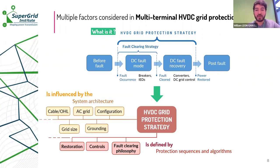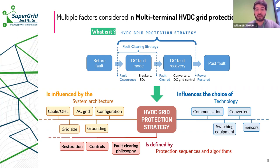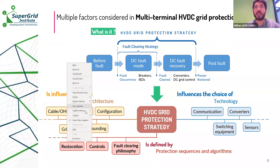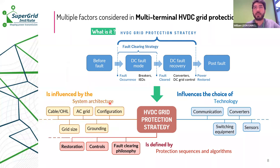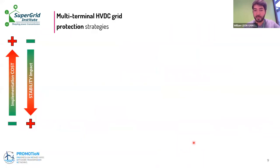The MTDC protection strategy can be influenced by various factors such as system architecture, the presence of cables or overhead lines, the system grounding, the MTDC grid size, and more. The choice of a protection strategy also influences the choice of certain technologies such as sensors, switching equipment, and communications. We've participated in protection projects since 2016 and came up with three categories of protection strategies.